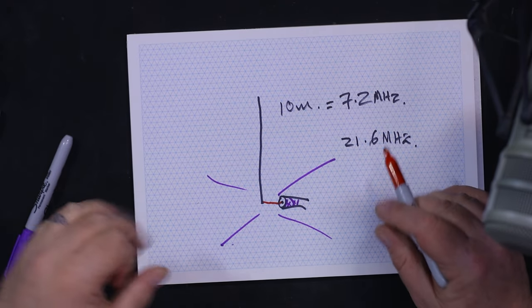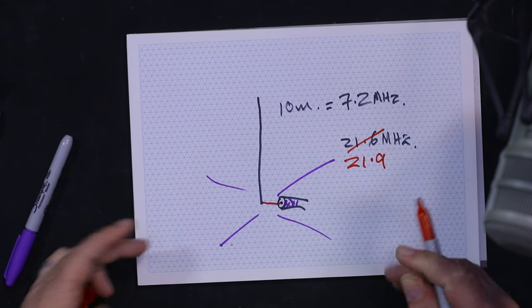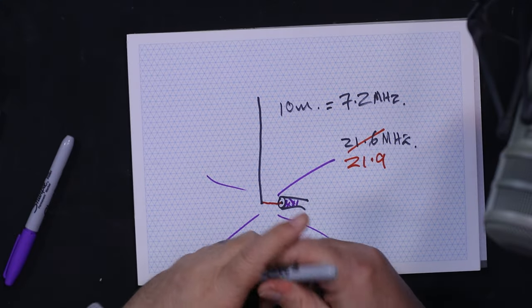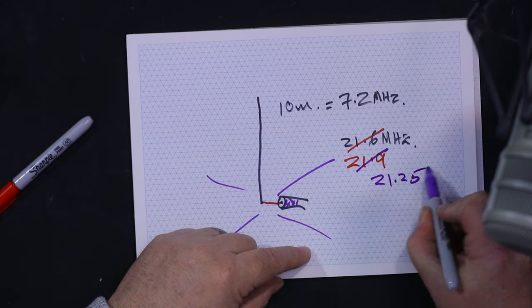Years ago I developed a technique - we'll do an end effect another day. What happens is it's not 7.2 times 3 is 21.6. Something again we'll cover on the end effect, it's going to be more. So it's not 21.6, it's 21.9, let's say. Actually nine is a little bit too far out. We want this ideally not even at 21.9, we want it down at about 21.25-ish because that's one of the amateur bands.